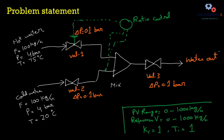This is a simple mixture in which two streams — both are water streams — one is a hot stream and another one is a cold stream, passing through this mixer. Our objective is to maintain a ratio between hot water and cold water, so we are going to set up a ratio controller.